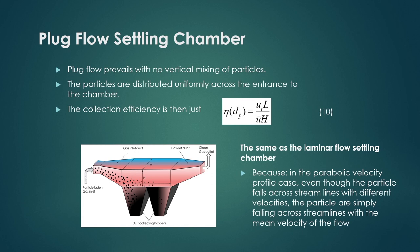Coming to the plug flow condition of settling chamber: there is no mixing of particles; the particles are distributed uniformly across the entrance to the chamber. The collection efficiency for the plug flow case is ut*L / (u_bar*H) — almost the same as in the laminar condition. This works the same as the laminar flow settling chamber because even though the parabolic velocity profile exists, particles fall across streamlines with the mean velocity of flow.